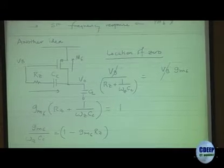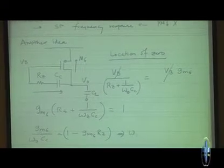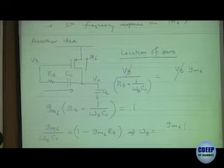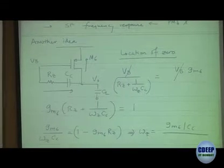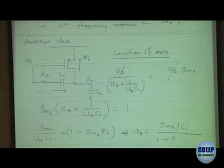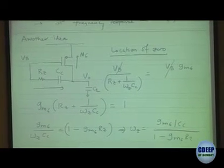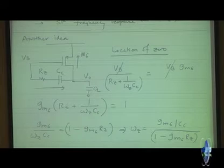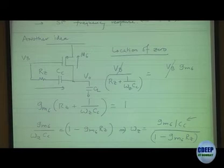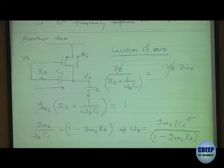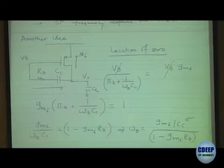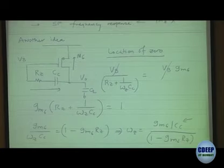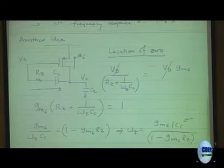This tells us that omega_Z equals GM6/CC divided by (1 minus GM6*Rz). Earlier we had just GM6/CC, and now we have this denominator (1 - GM6*Rz) which comes into play. Whenever we have (1 - GM6*Rz) we get excited because we can do some cancellation and tricks.